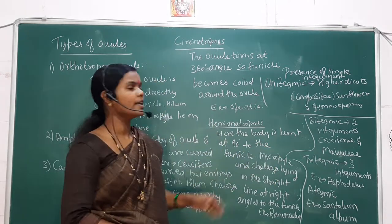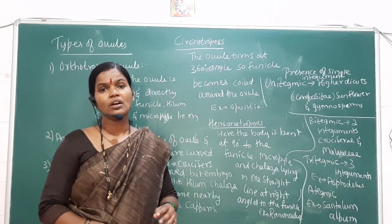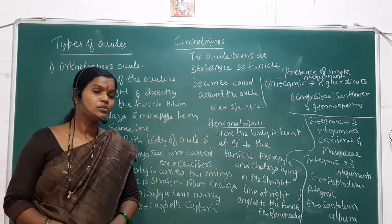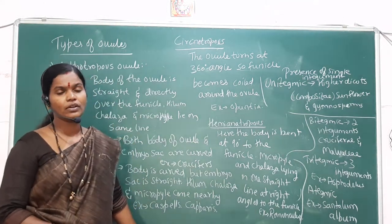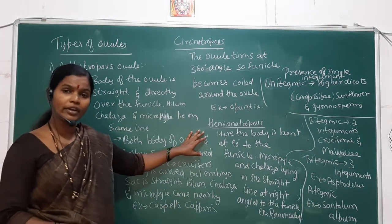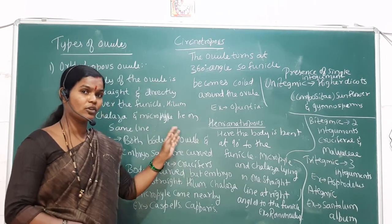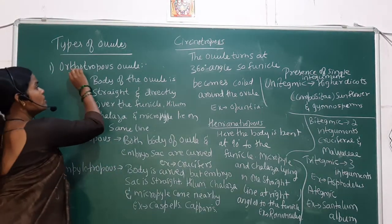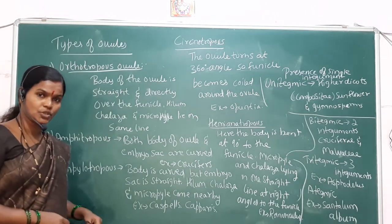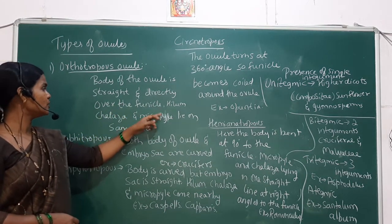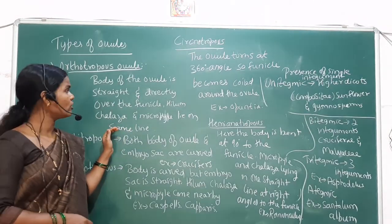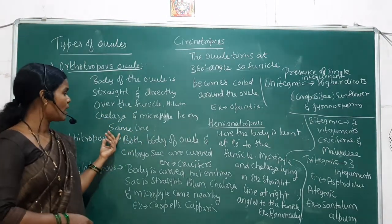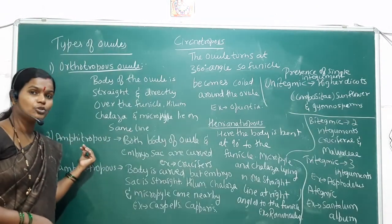Apart from the anatropous ovule studied for theory, there are five more types of ovules based on shape. The first is the orthotropous ovule, where the body of the ovule is straight and the funicle, hilum, chalaza, and micropyle all lie on the same straight line.